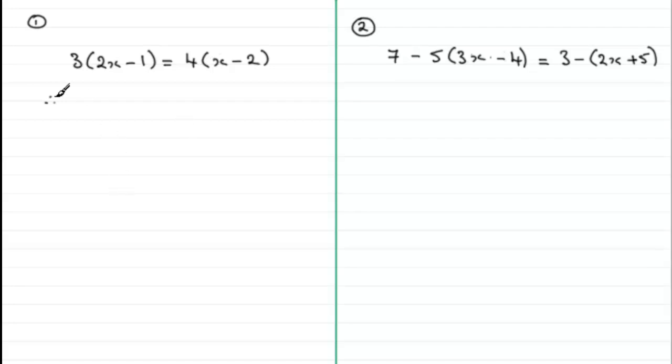So if we do that, we've got three times 2x, which is 6x. Three times the minus one is minus three. And this equals four times the x, which is 4x, and four times the minus two, which is minus eight.